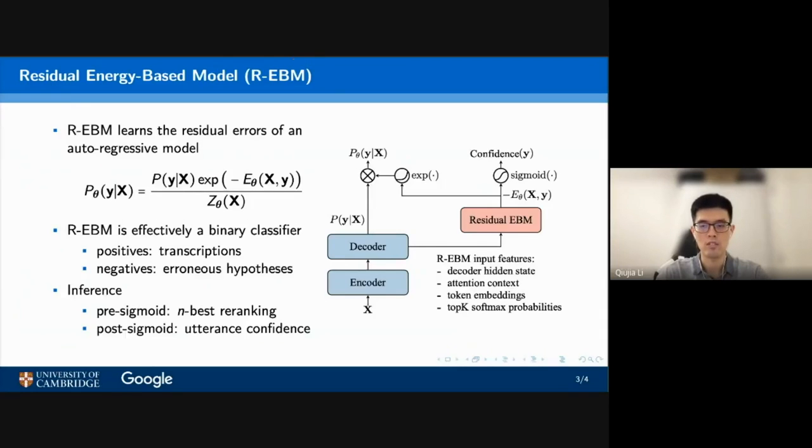Now let's take a closer look. R-EBM learns the residual error of the model distribution P from the data distribution. R-EBM takes features from the encoder and the decoder to produce a scalar. During training, the end-to-end ASR model is fixed and only R-EBM parameters are updated.